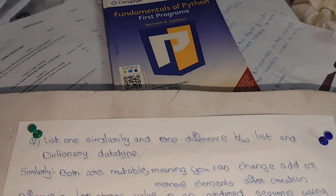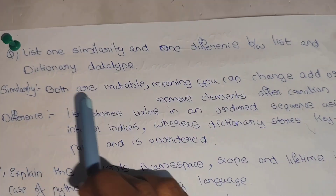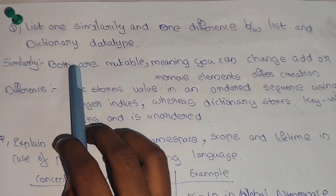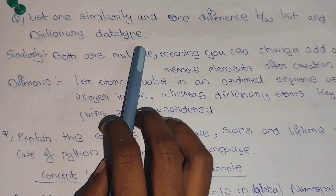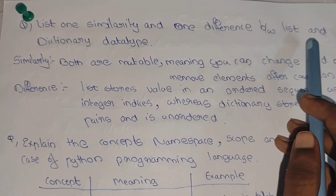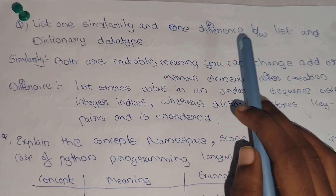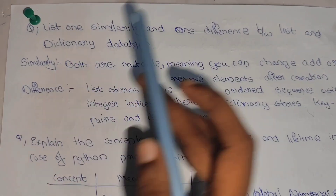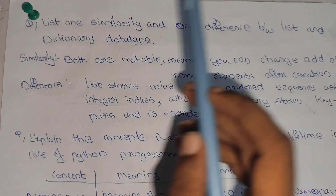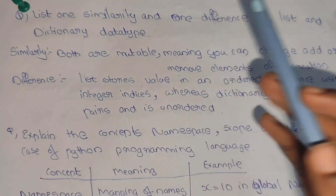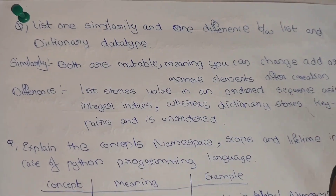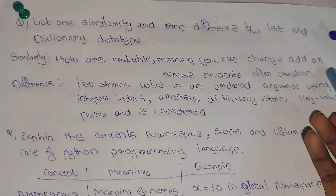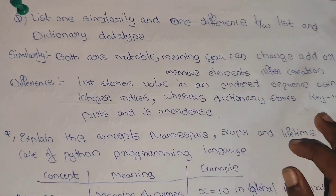Next question: list the similarity and difference between list and dictionary data type. The similarity is that both list and dictionary are mutable — meaning you can change, add, or remove elements after creation.